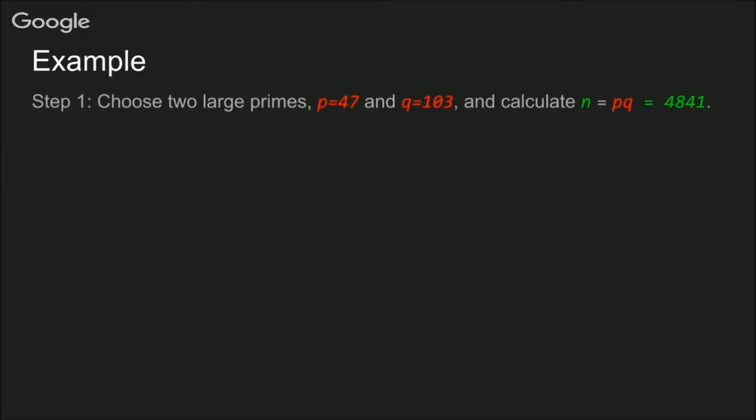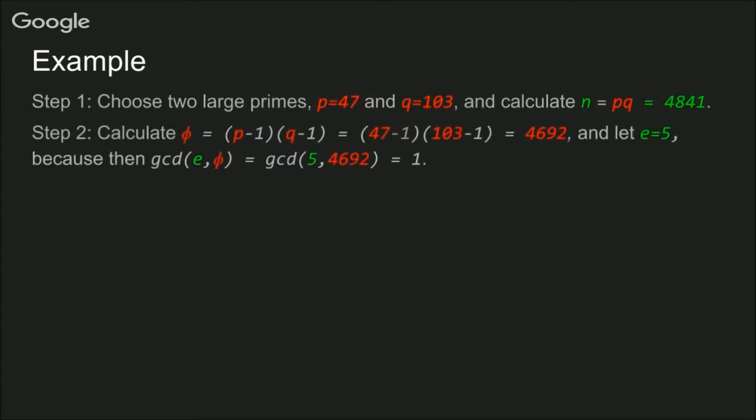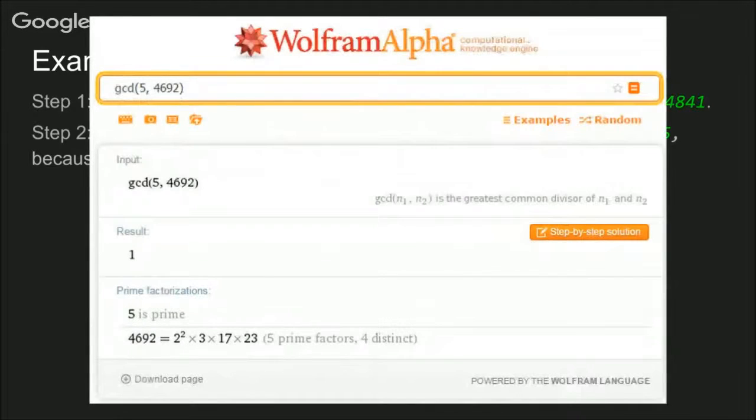Step one, we're going to pick two large primes, and I chose 47 and 103. And then we're going to calculate N as their product, 4841. Step two is to calculate φ, which is (P-1) times (Q-1), and the result of that is 4692. Then we get to pick a number E, and I picked five, because the GCD of five and 4692 is 1. And we can verify that with the calculator.